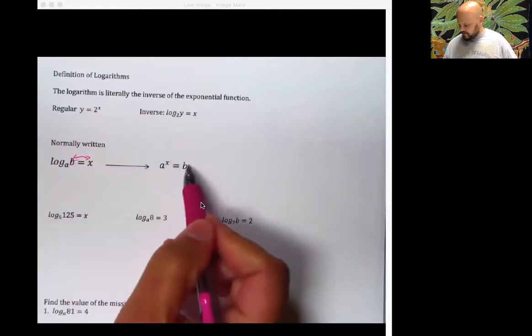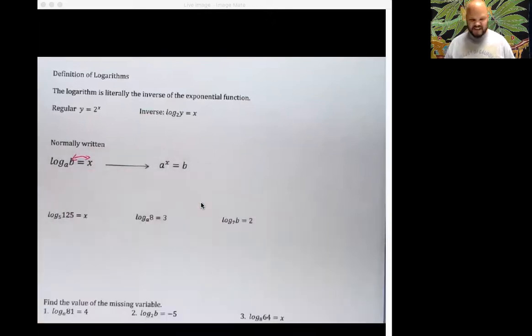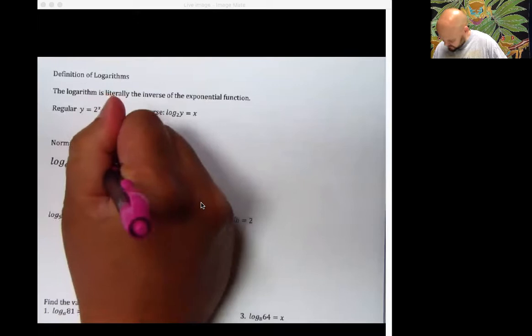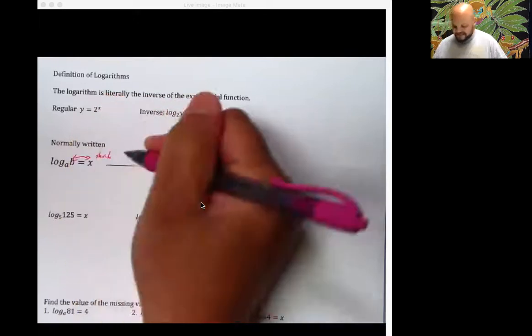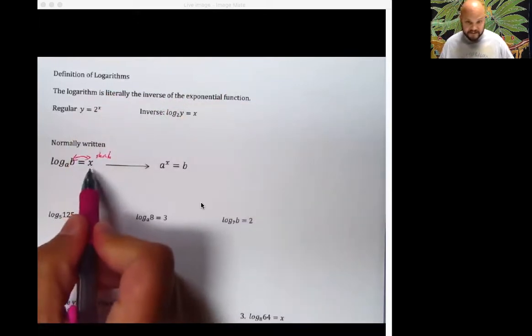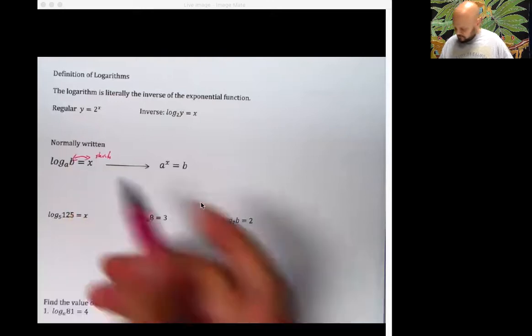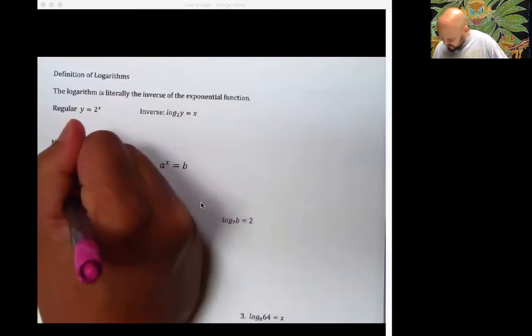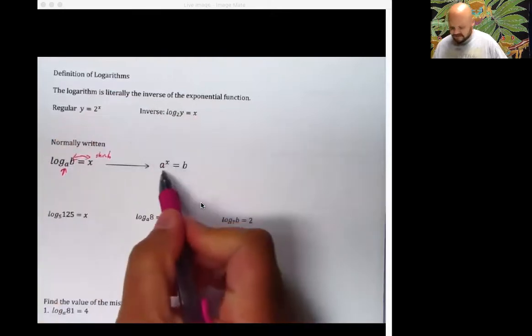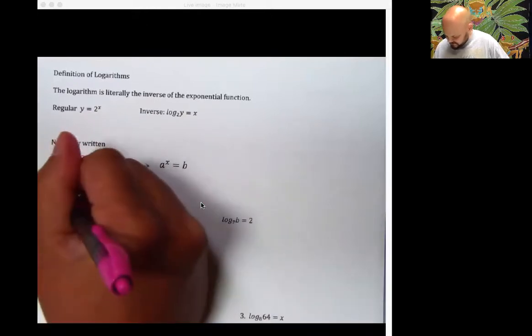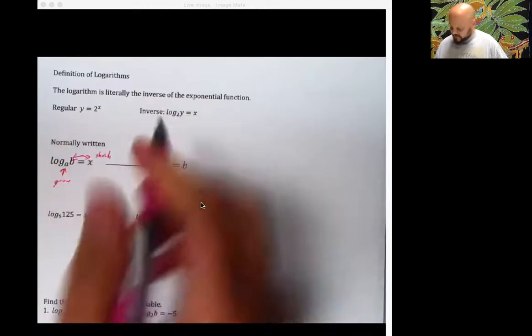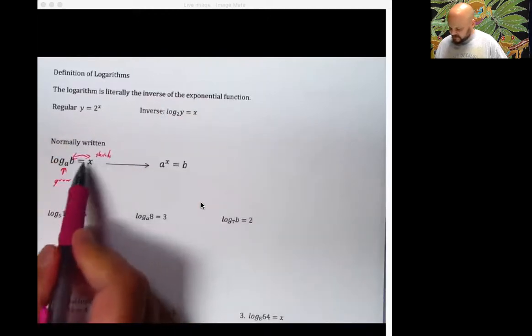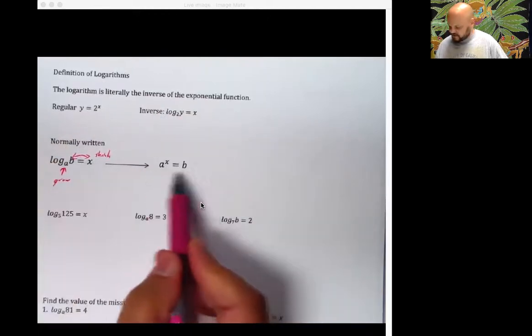x is now up here, b is now over there. They change sides of the equal sign. Also, the x shrinks. Because that is the exponent that we're talking about right there. The a, which is the base of our logarithm, is also the base of this exponential equation over here. So, it's just going to grow. Switch these two spots, shrink the x, grow the a, you've got your new stuff.